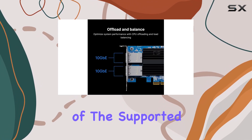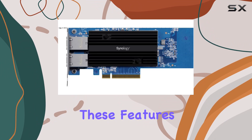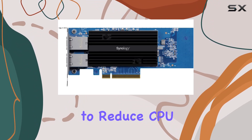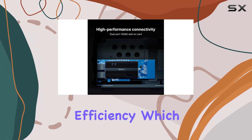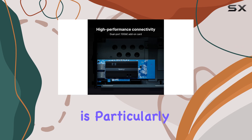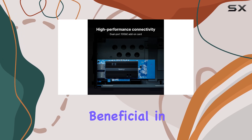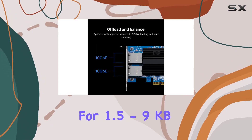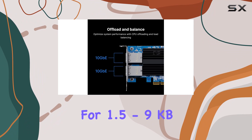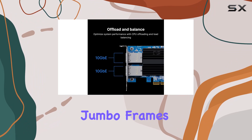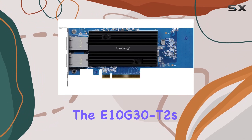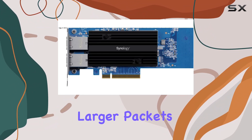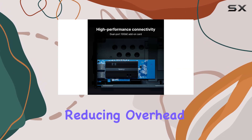These features work together to reduce CPU load and improve data handling efficiency, which is particularly beneficial in high-throughput environments. The support for 1.5-9KB jumbo frames further enhances the E10G30T2's performance by allowing larger packets to be sent over the network.